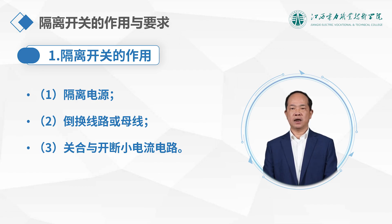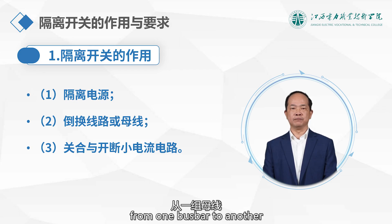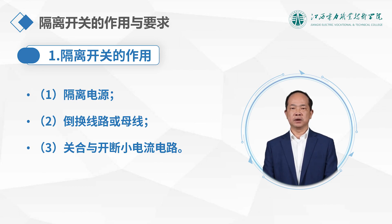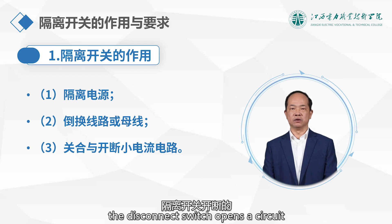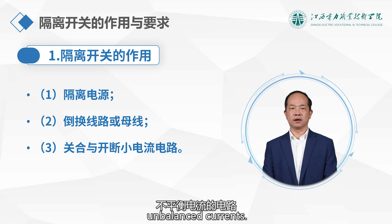Second, to switch lines or bus bars. Disconnect switches can transfer electrical equipment or lines from one bus bar to another, opening circuits with only small unbalanced currents. During this process, the disconnect switch opens a circuit with only small unbalanced currents.